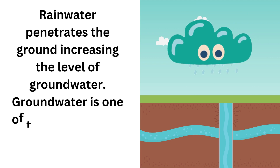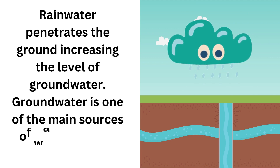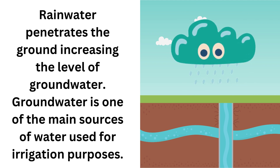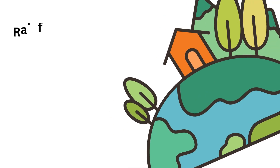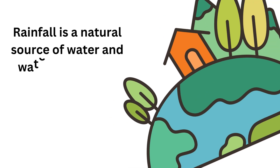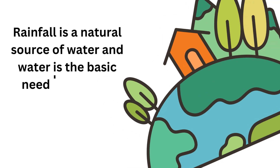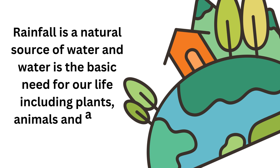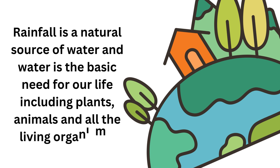Groundwater is one of the main sources of water used for irrigation purposes. Rainfall is a natural source of water, and water is the basic need for our life, including plants, animals, and all living organisms.